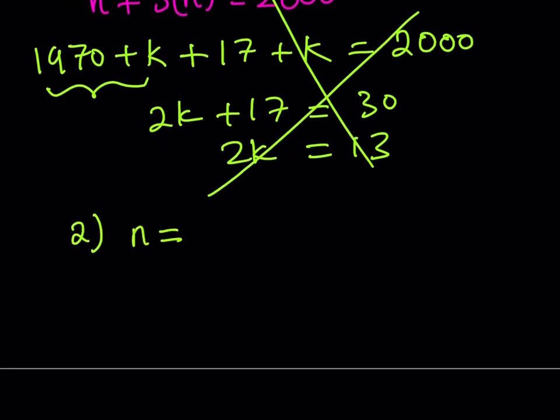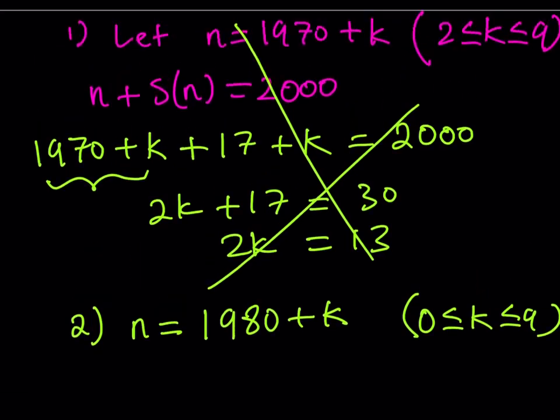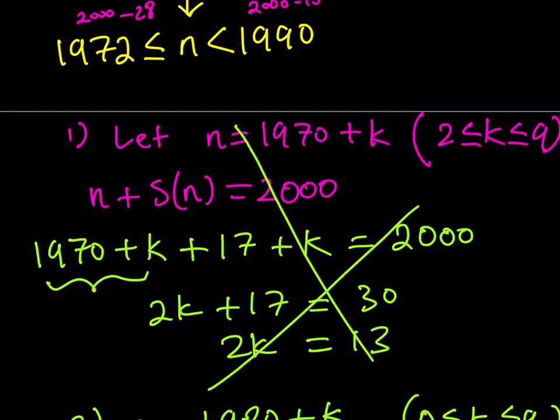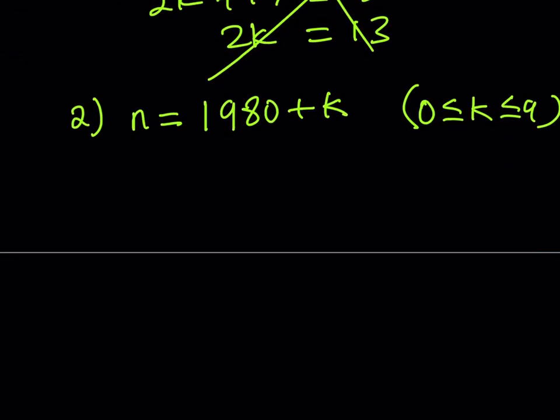The second case goes like this. n can be written as 1980 plus k, and k is going to be between 0 and 9 in this case, because I can have anything 1980 through 1989. And notice that our values are going to range between these two, so it can't be 1990, but it can be 1989. That's the highest that I can get.